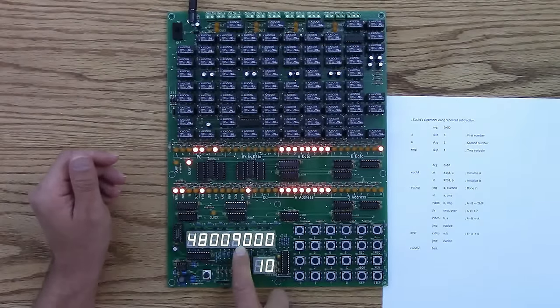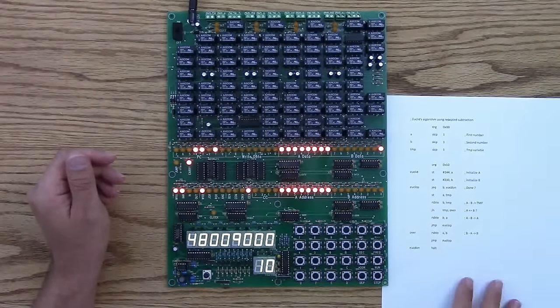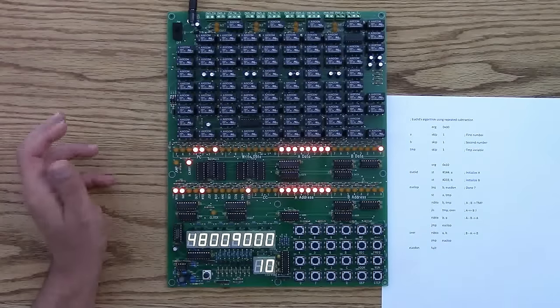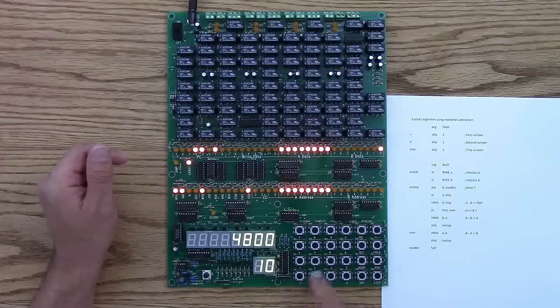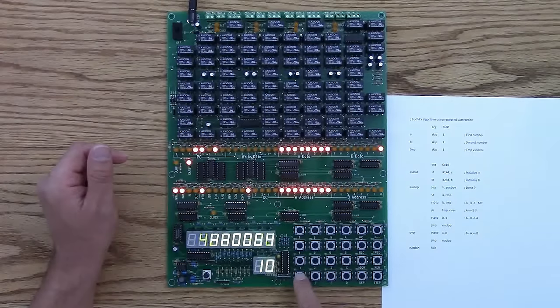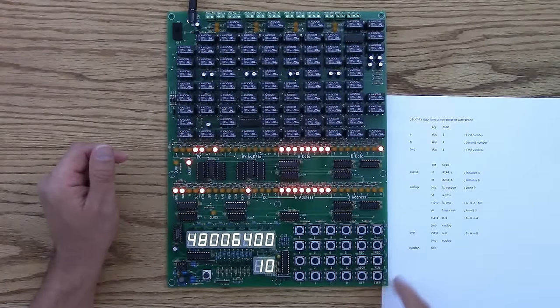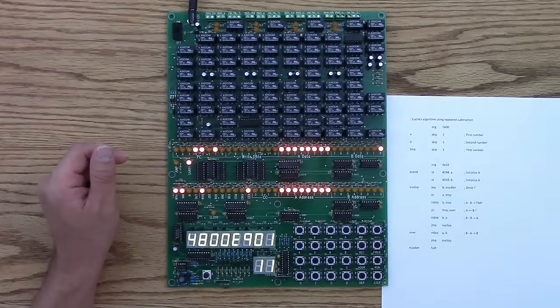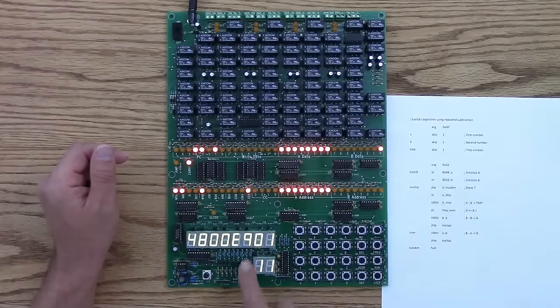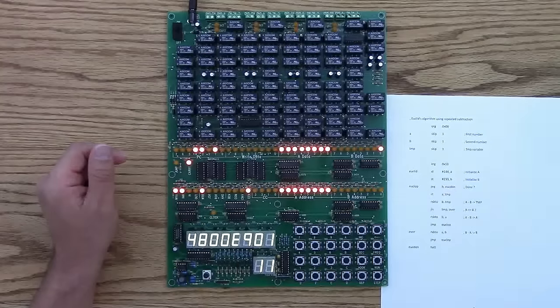And here's hex 90 is the 144. So I'm going to change that to 64, which is decimal 100. I hit the deposit button, increment the address. And now I'm going to change the E9, which is 233, into 32.